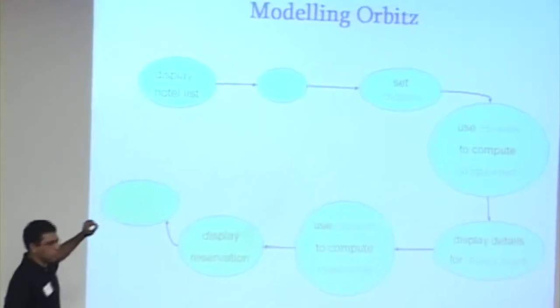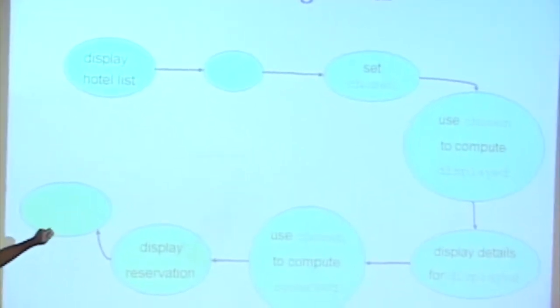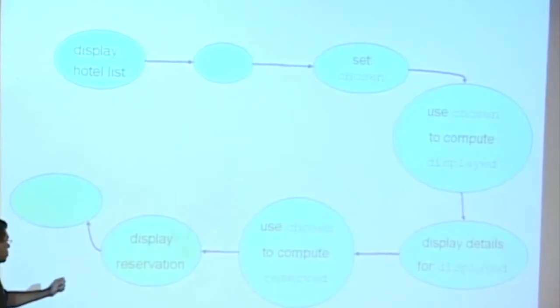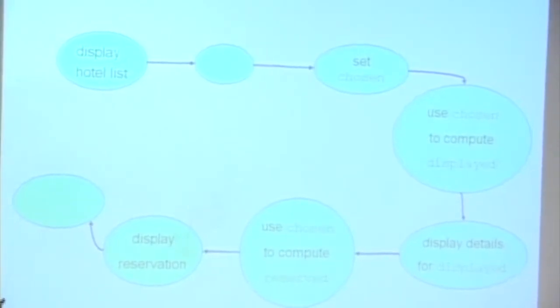Display a list of hotels, set a variable saying which one the user chose, display the details, use the chosen to compute the reserve hotel, display the reservation, and so on.